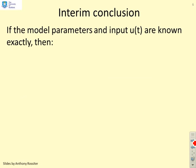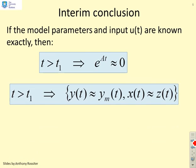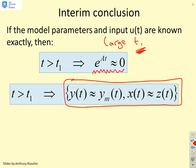Here's the interim conclusion. If the model parameters and the input are known exactly, then for t greater than t1 where t1 is some large t, you're going to have that e to the At is approximately 0. Then what you can show is the errors in the outputs of the model and the process and the states of the model and the process must all disappear.